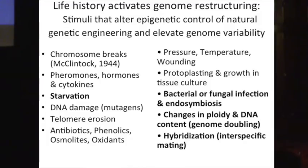Symbiogenesis can bring about evolutionary change. Horizontal DNA transmission can bring about evolutionary change rapidly. Hybridization can bring about change. Early pioneers including Lamarck and later McClintock also emphasized the importance of hybridization, and there is a whole field of evolutionary biology called hybrid speciation — but it's not seen as central, whereas the evidence seems to indicate that maybe it should be.